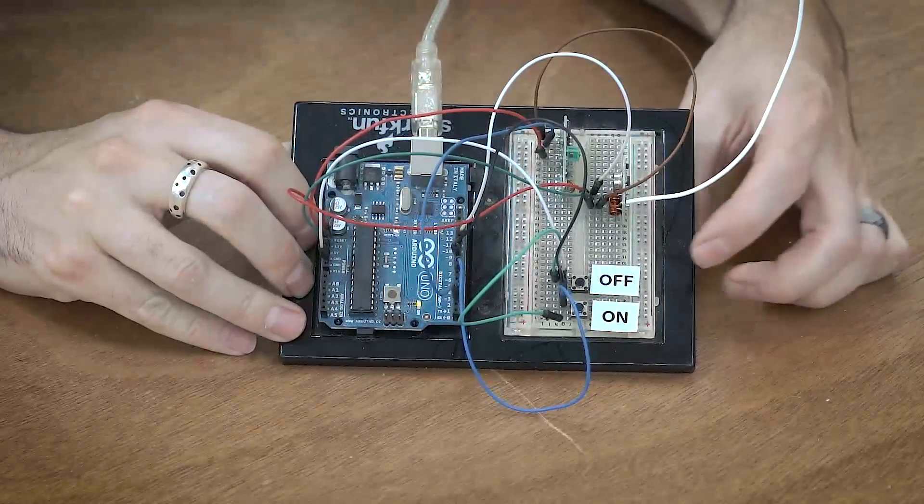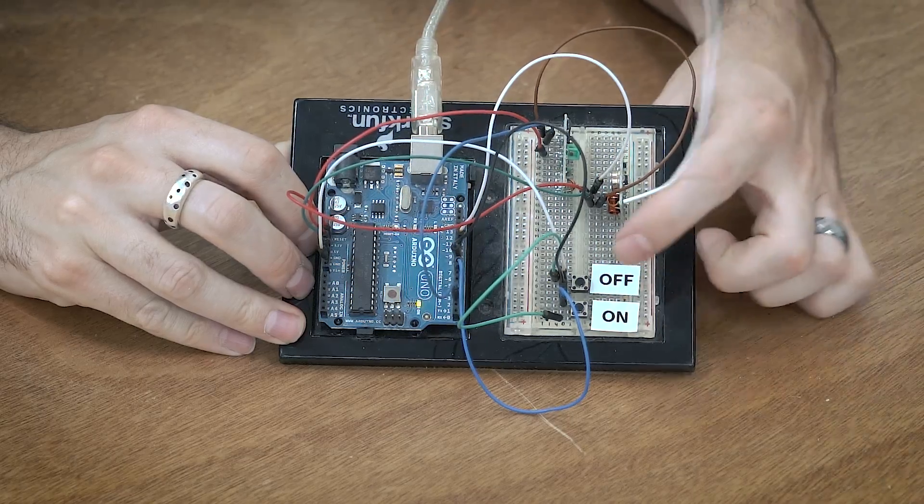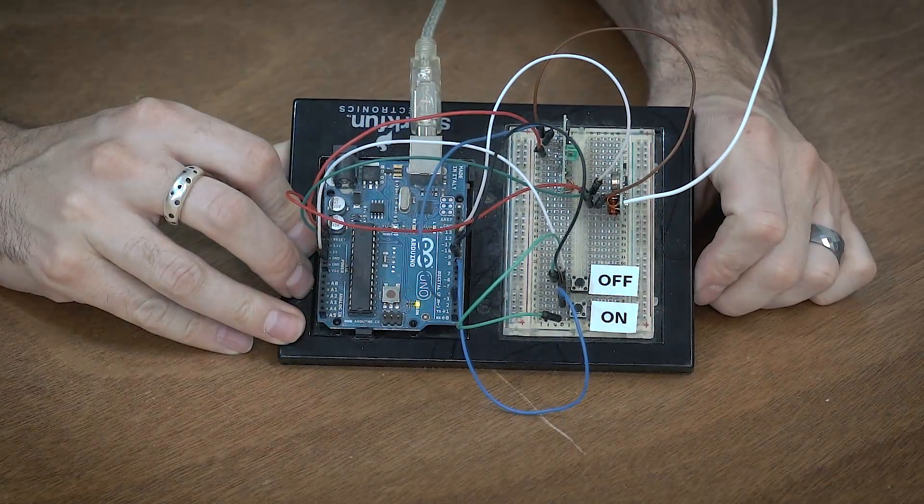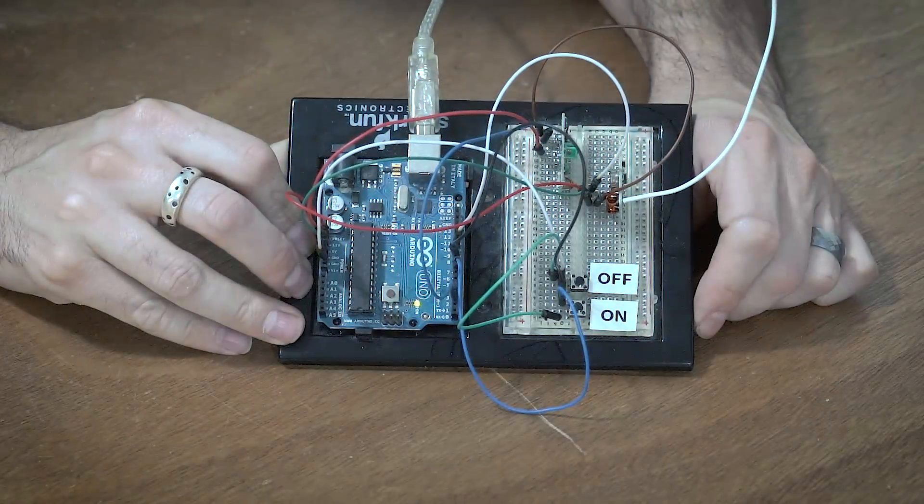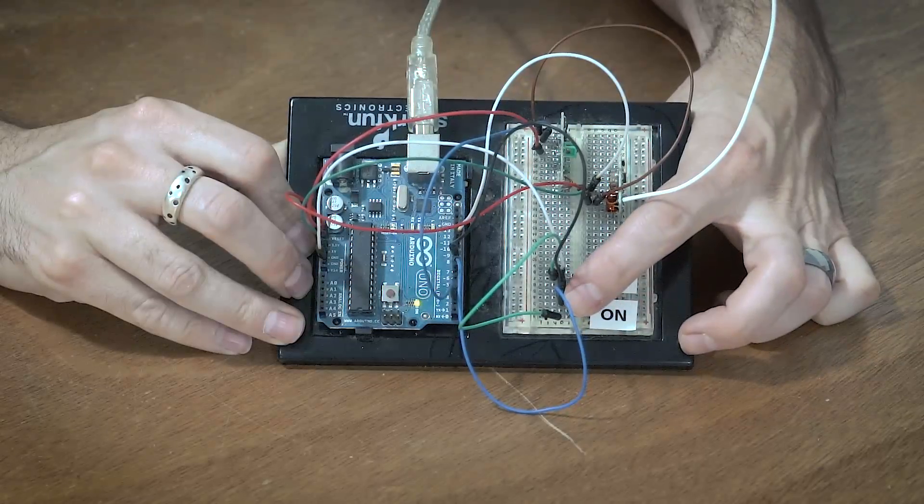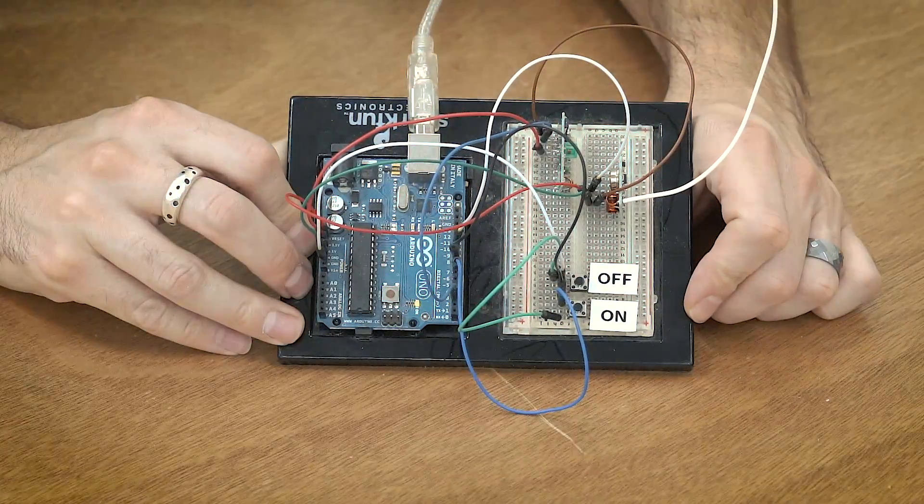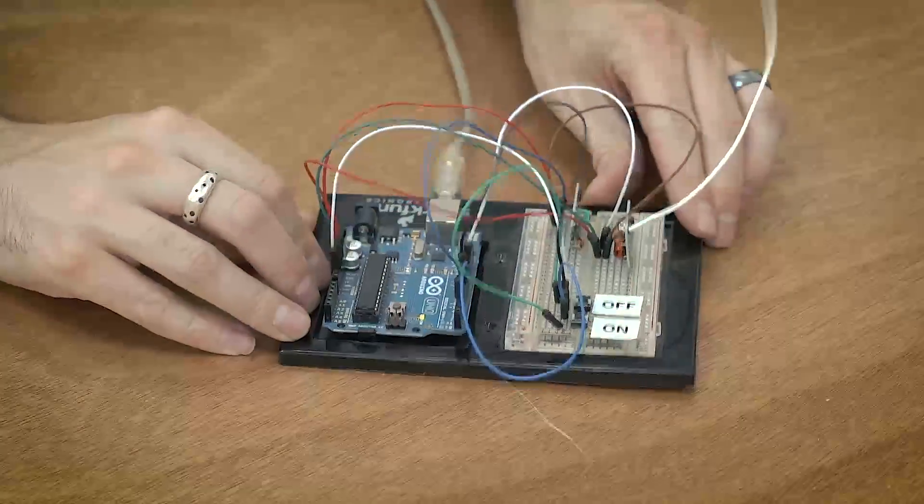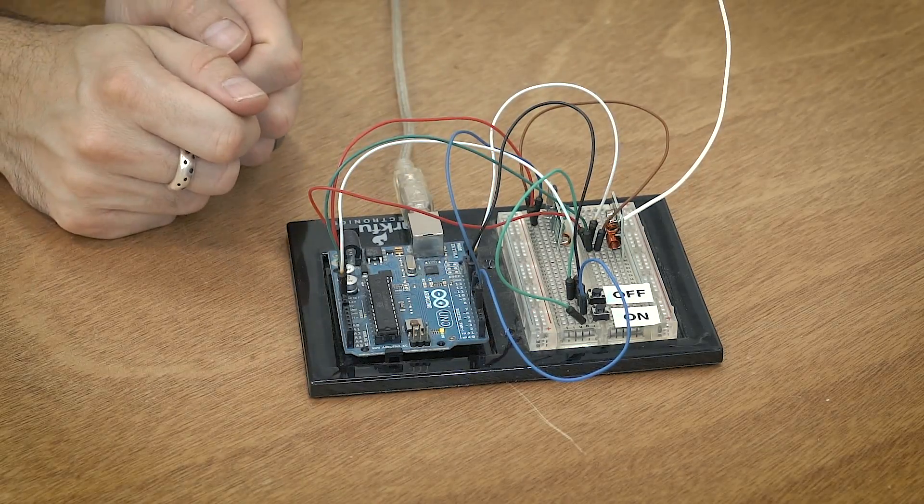Okay now it's time to test everything out. I'm going to go ahead and hit the off since the lights are currently on, and that turned everything off. And I'm going to go ahead and hit on. So that is working. Next step is to condense all this down and put it inside the enclosure.